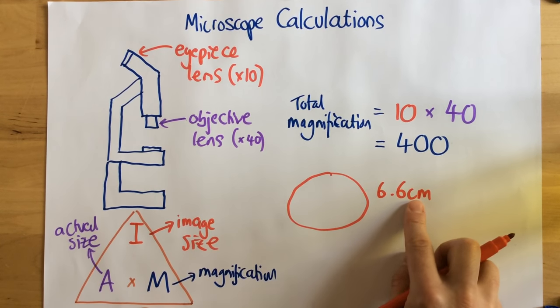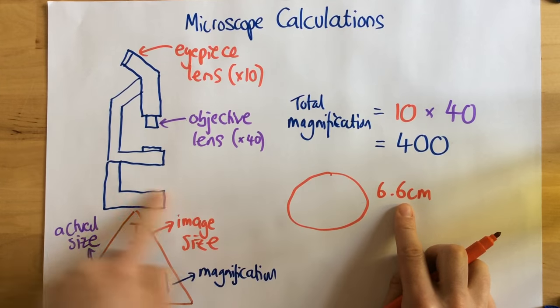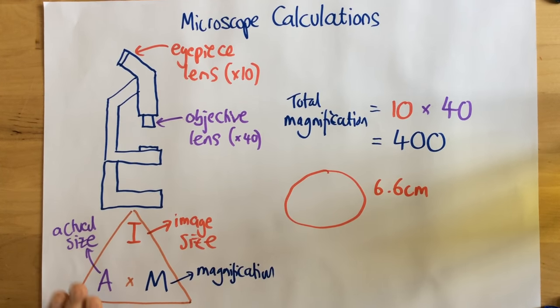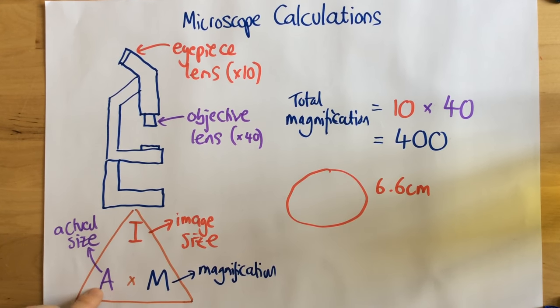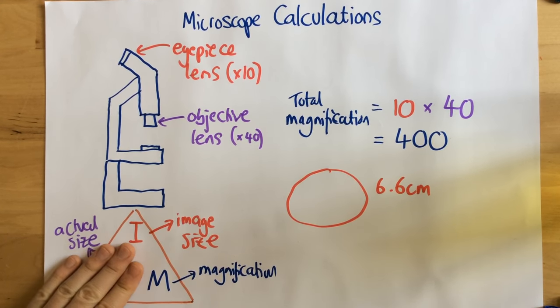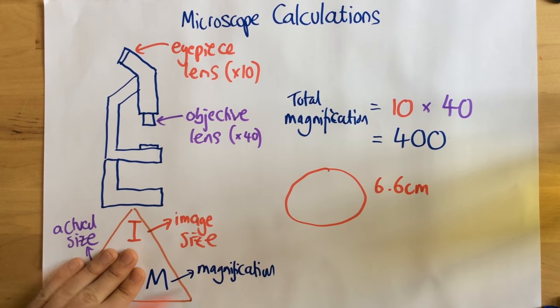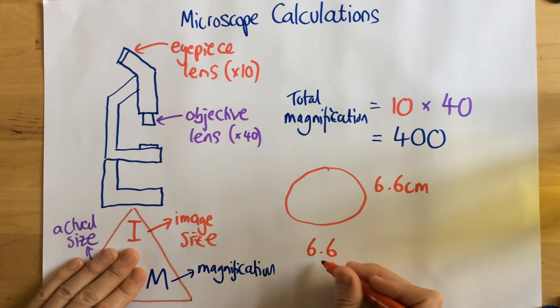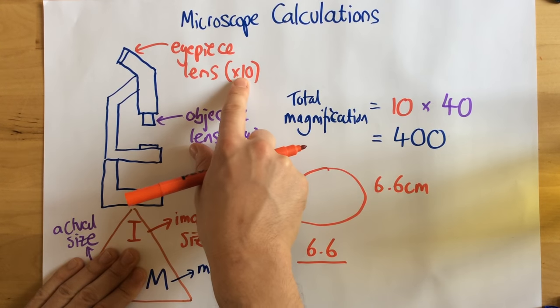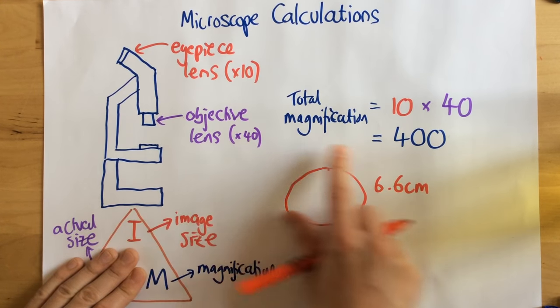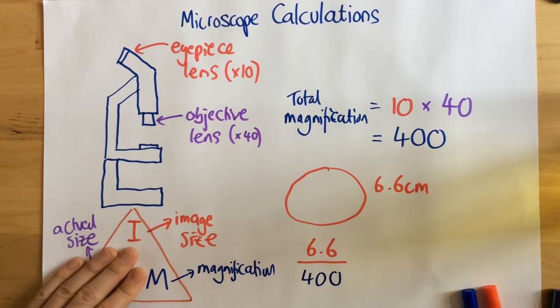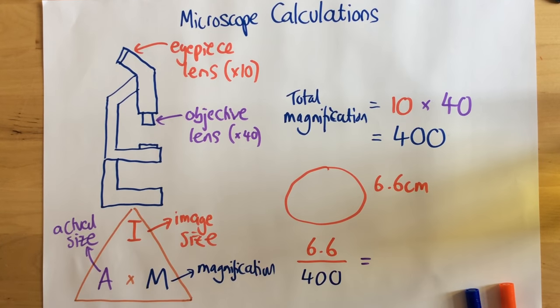So what I then need to do is I then need to use this equation triangle to find the actual size. So just like normal, whenever I use an equation triangle, I cover the thing that I'm looking for. So I'm looking for the actual size, so I'm going to cover that up. So what I'm going to need to do is I'm going to need to take my image size, which is 6.6 centimetres, and divide it by the magnification. For this particular microscope, remember, because the eyepiece lens is 10 and objective lens is 40, the total magnification is 400. So all I'm doing is 6.6 divided by 400 in order to find my actual size.